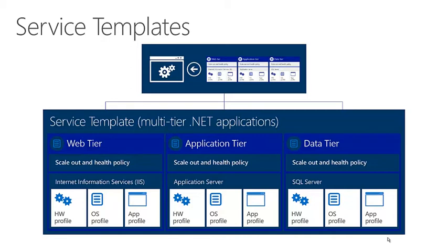Defining your application requirements with a repeatable construct like service templates makes provisioning faster and less error-prone than manually deploying the application. Service templates provide the blueprint for the application service, including specifications for the hardware, operating system, and application packages. System Center 2012 R2 supports multiple package types for .NET applications, including MS Deploy for the web tier and SQL DAC for the data tier. Operationalizing service templates will likely require active collaboration between application developers, operators, and DC admin roles to standardize the initial set of hardware, OS, and application profiles.